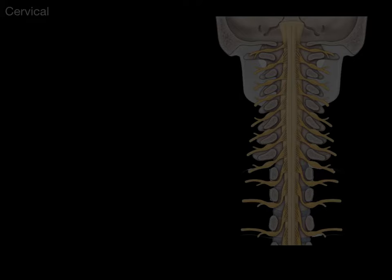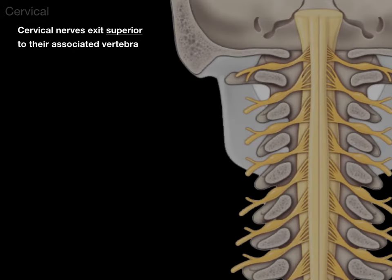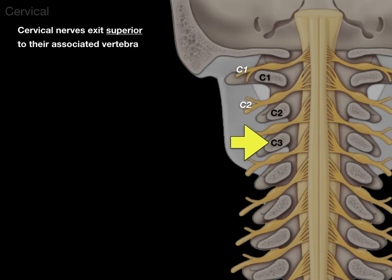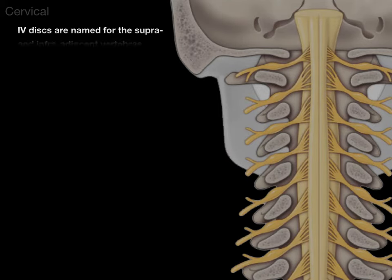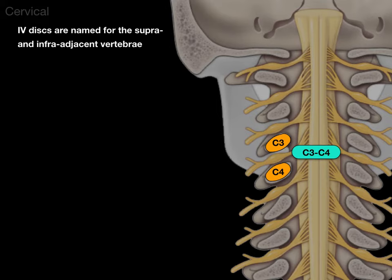Starting in the cervical region, cervical nerves exit superior to their associated vertebra. So there is the C1 vertebra, C1 nerve; C2 vertebra, C2 nerve; C3 vertebra, C3 nerve; C4, and so on. Intervertebral discs are named for the supra and infra adjacent vertebrae. So there's the C3 vertebra and C4 vertebra, meaning the disc in between is the C3-C4 intervertebral disc.